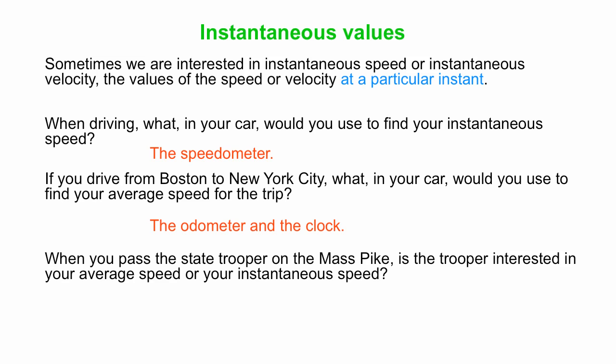And along this drive, you're driving on the Mass Pike in Massachusetts, the turnpike. You pass the state trooper. The trooper is interested in what? Your average speed, your instantaneous speed, and of course, it's your instantaneous speed. And what they get in their radar gun should match what's on your speedometer, so you get no excuse if you're speeding.